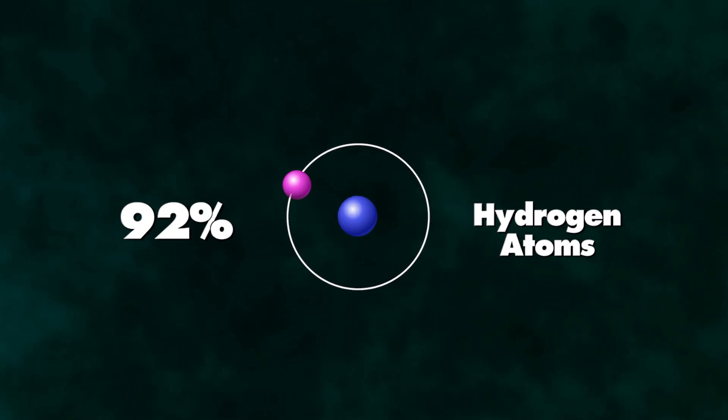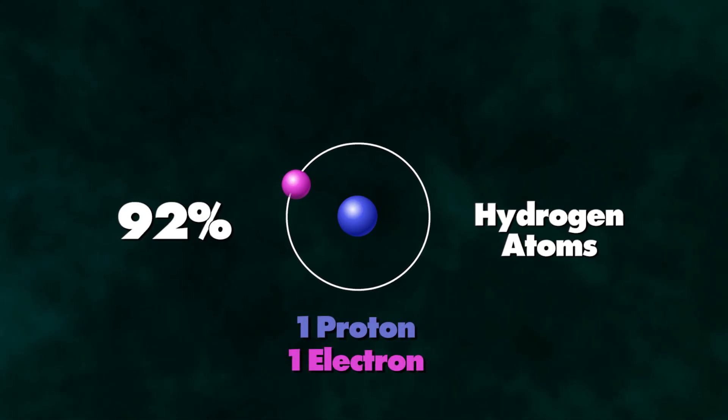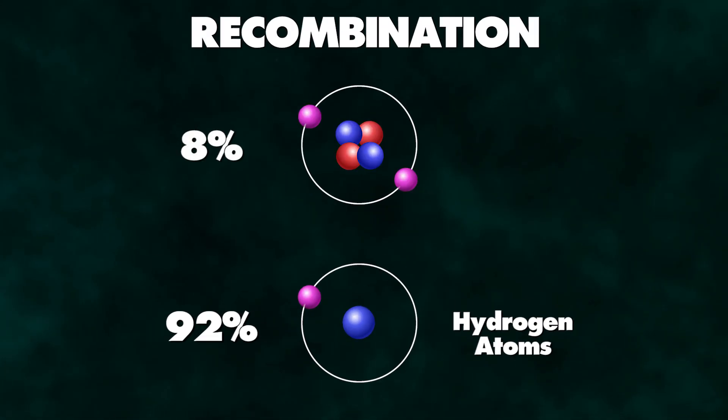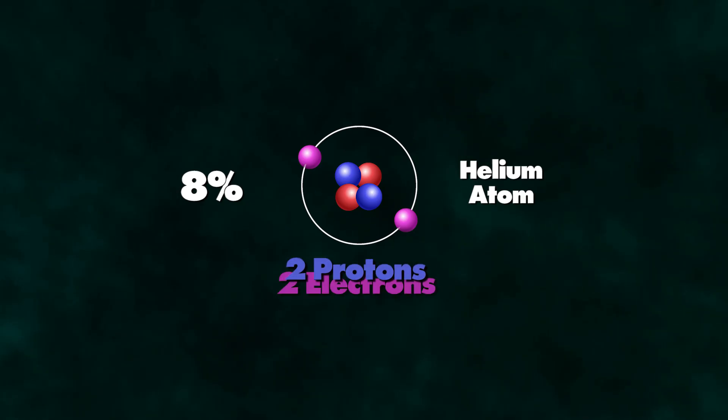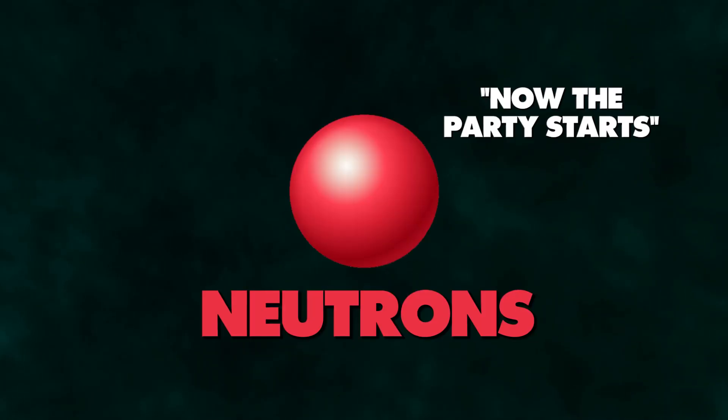This was the most common atom formed in this stage simply because it's the smallest and simplest to make. The remaining 8% were just the next simplest atoms to make. Helium. Which is made up of 2 protons, 2 electrons and 2 neutrons. Finally they get involved right?